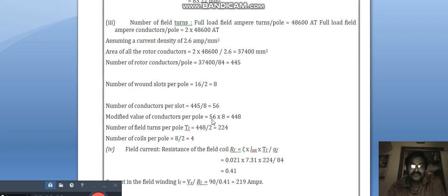Modified value of conductors per volt: 56 into 8, 448. Number of field turns per volt, T_f is equal to 448 / 2, 224. Number of coils per volt, 8 / 2 is equal to 4.